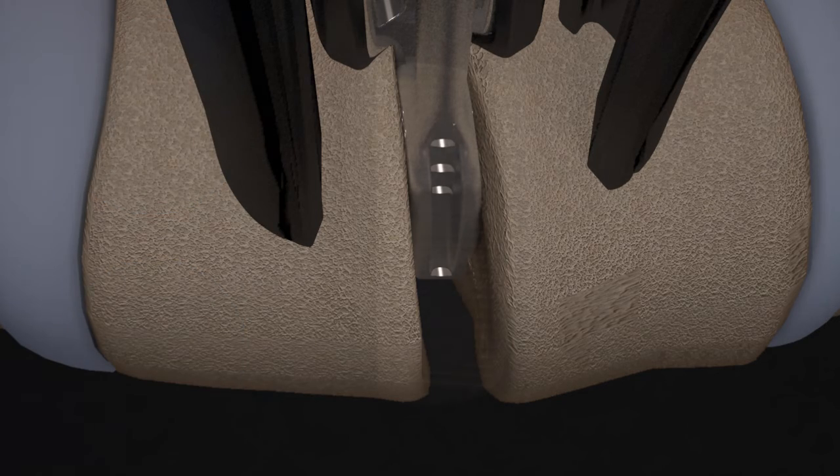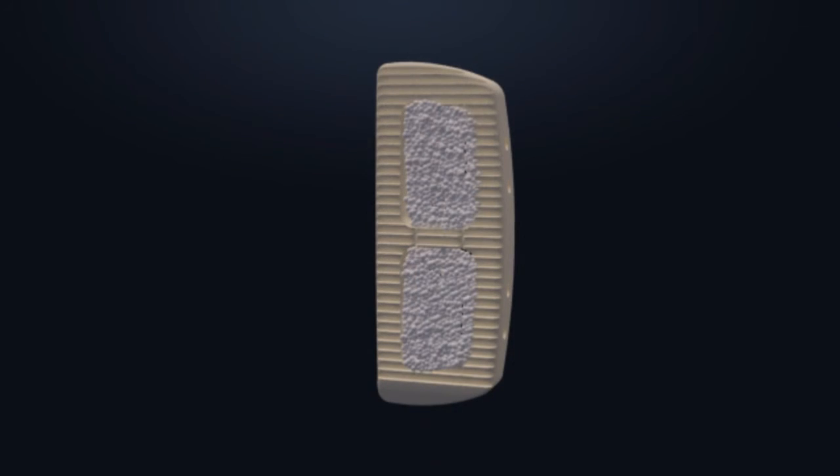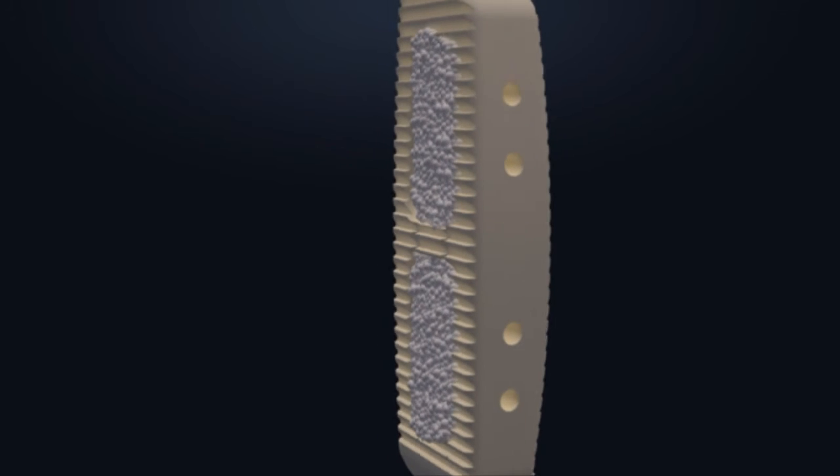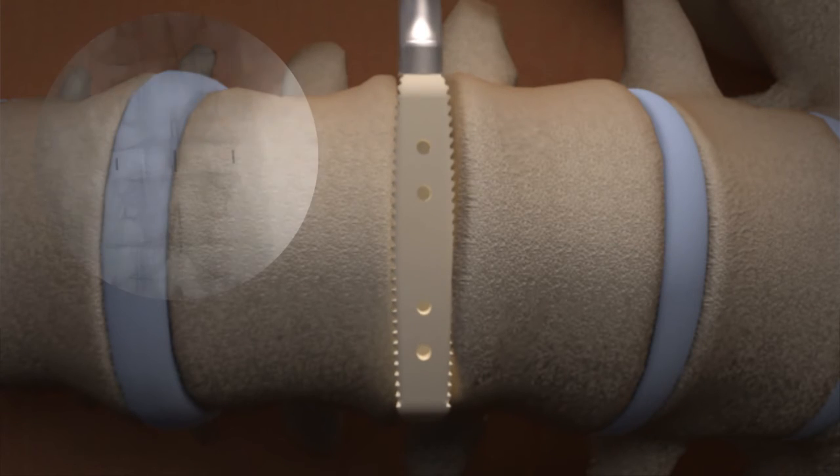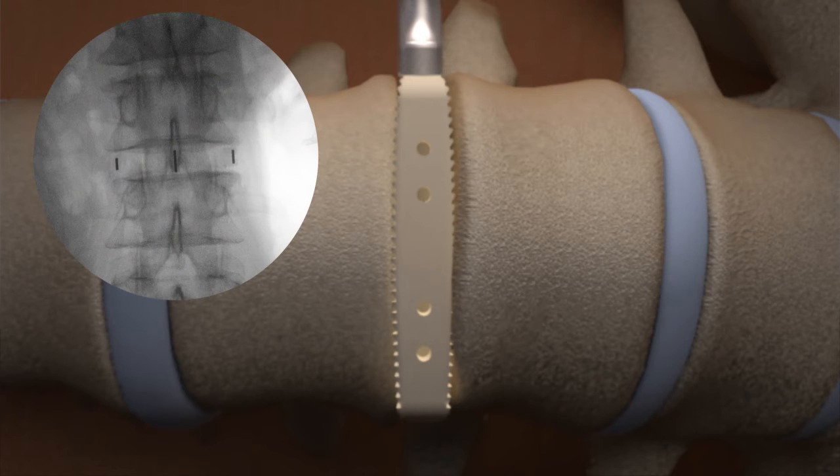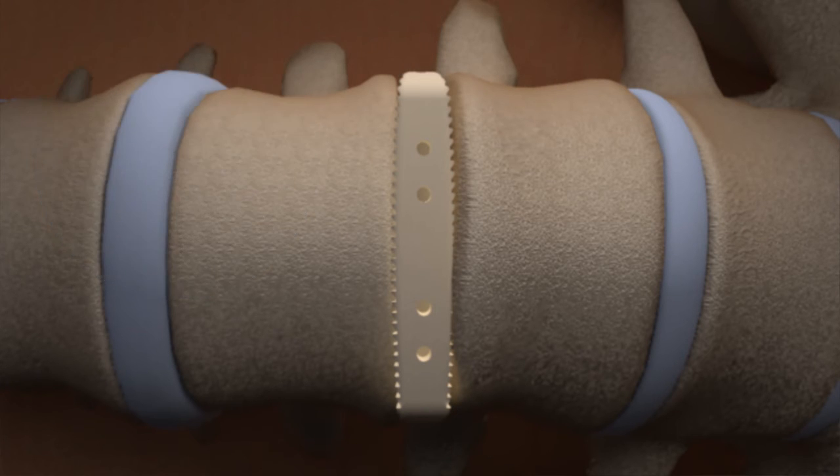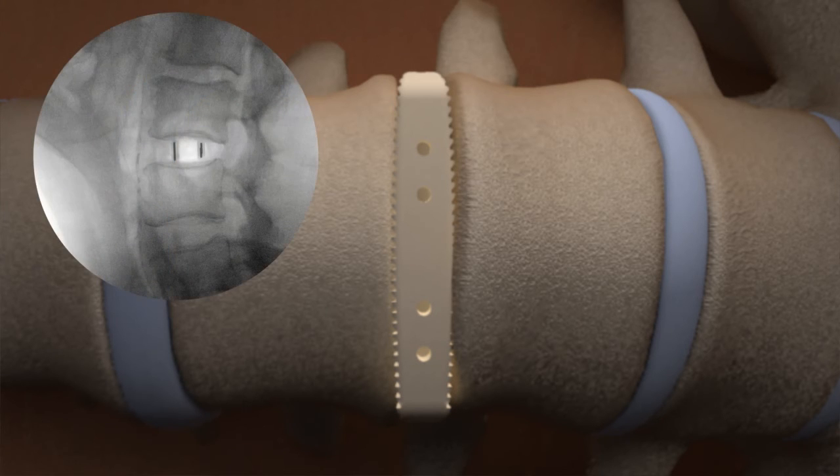Pack the implant with an appropriate graft material. Impact the implant into the disc space. Use AP fluoroscopy to confirm that the center implant marker aligns with the spinous process. The implant should span the width of the vertebral body. Remove the implant inserter and confirm the implant is in a good AP position using lateral fluoroscopy.